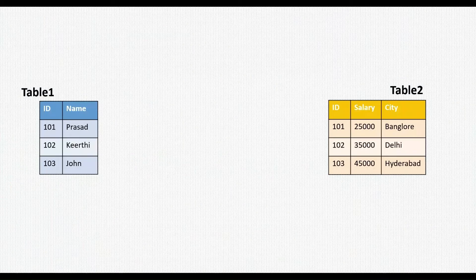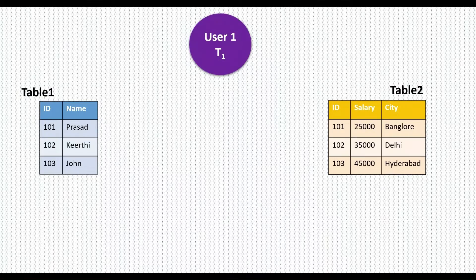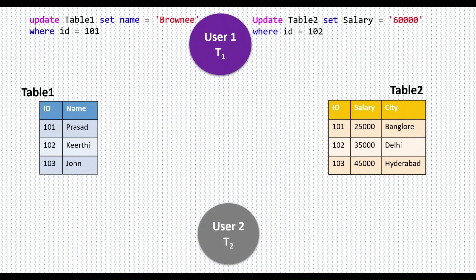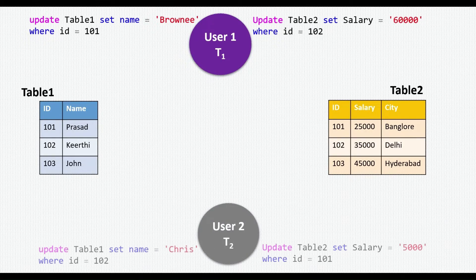We have user1 executing transaction T1 that contains two update statements. Similarly, we have user2 executing transaction T2, which also contains two update statements.